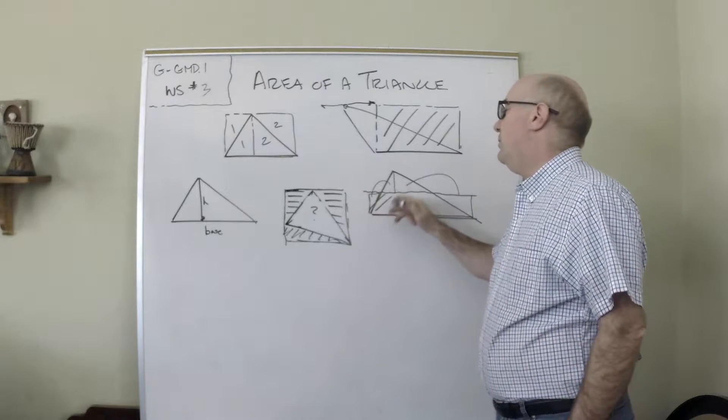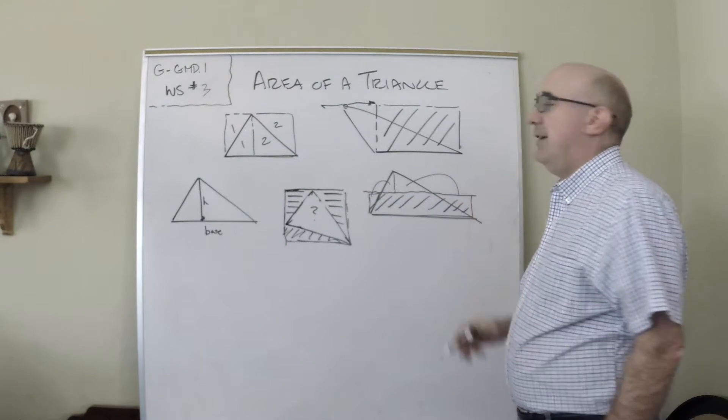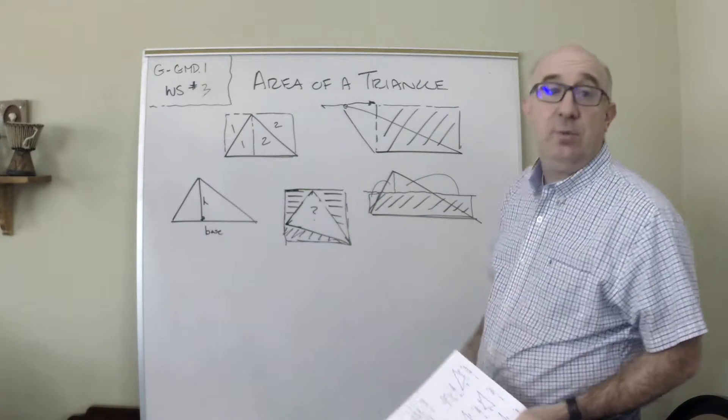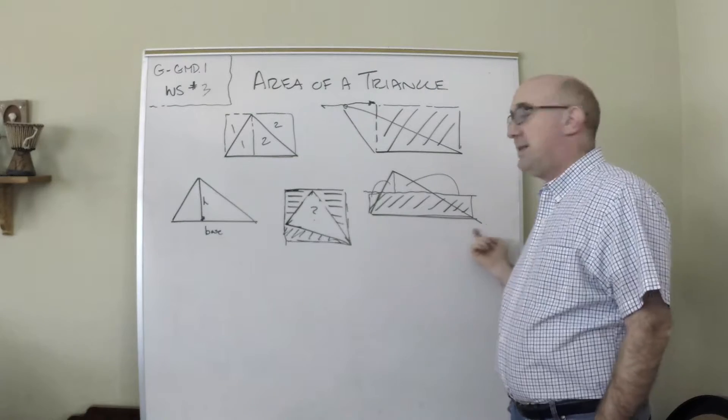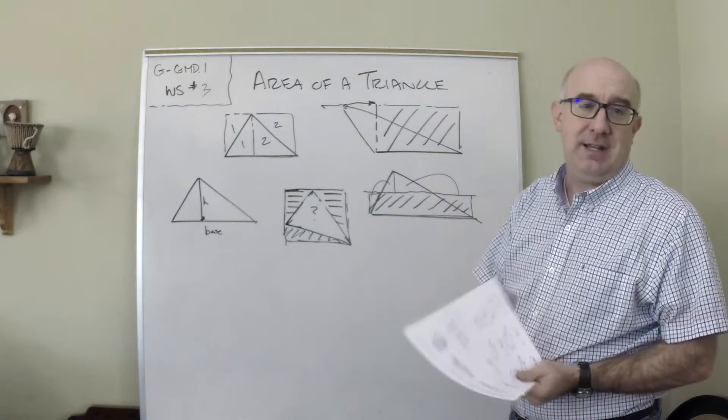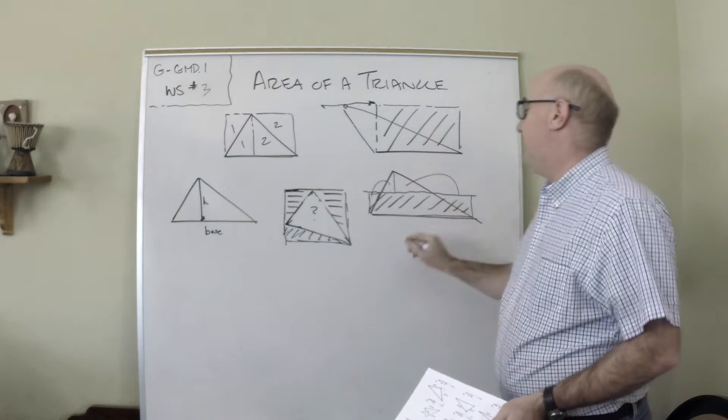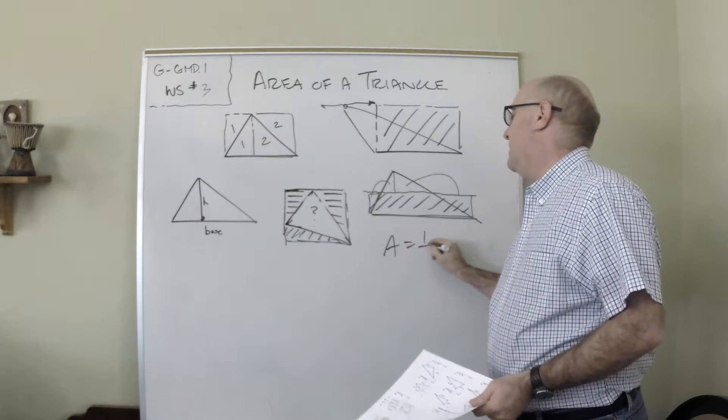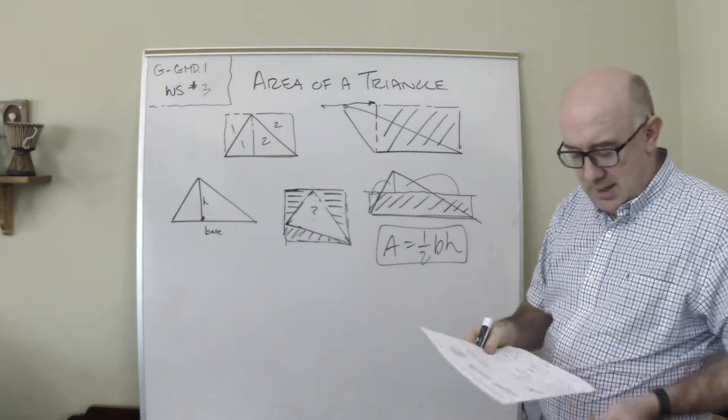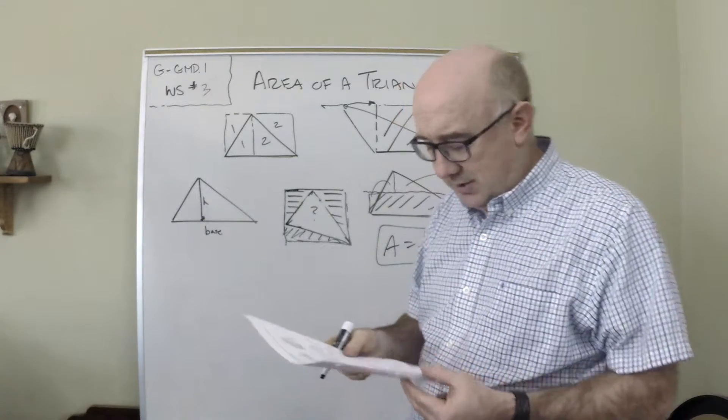And what you would form is exactly a rectangle, and that rectangle, which represents the area of the original triangle, would be the same base but half the height. And so there again is half the height—one half the base times the height. Very powerful.